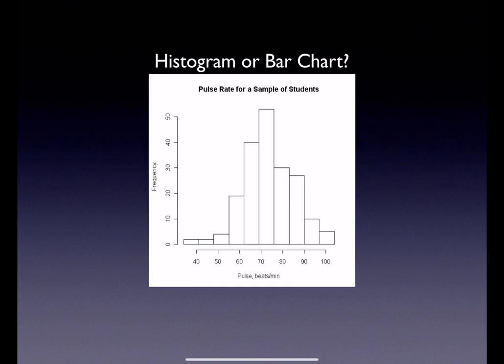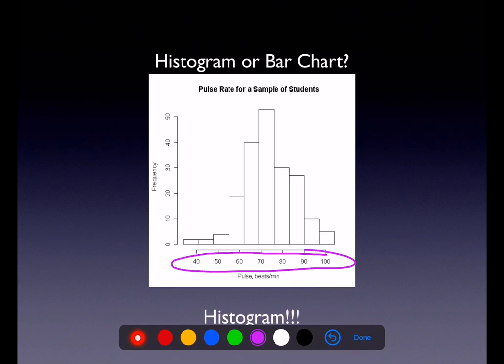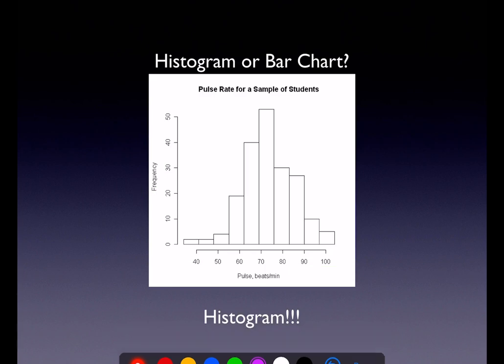Okay, here comes the next one. So histogram or a bar chart. Pause the video, get an answer. Ready for the big reveal? Oh my God, that's the histogram. And that's because you can see we have a numerical variable along the x-axis. We've got frequency along the y. And that's great. You've got no spaces between the bars. There was no gaps in the data. Okay, fantastic.